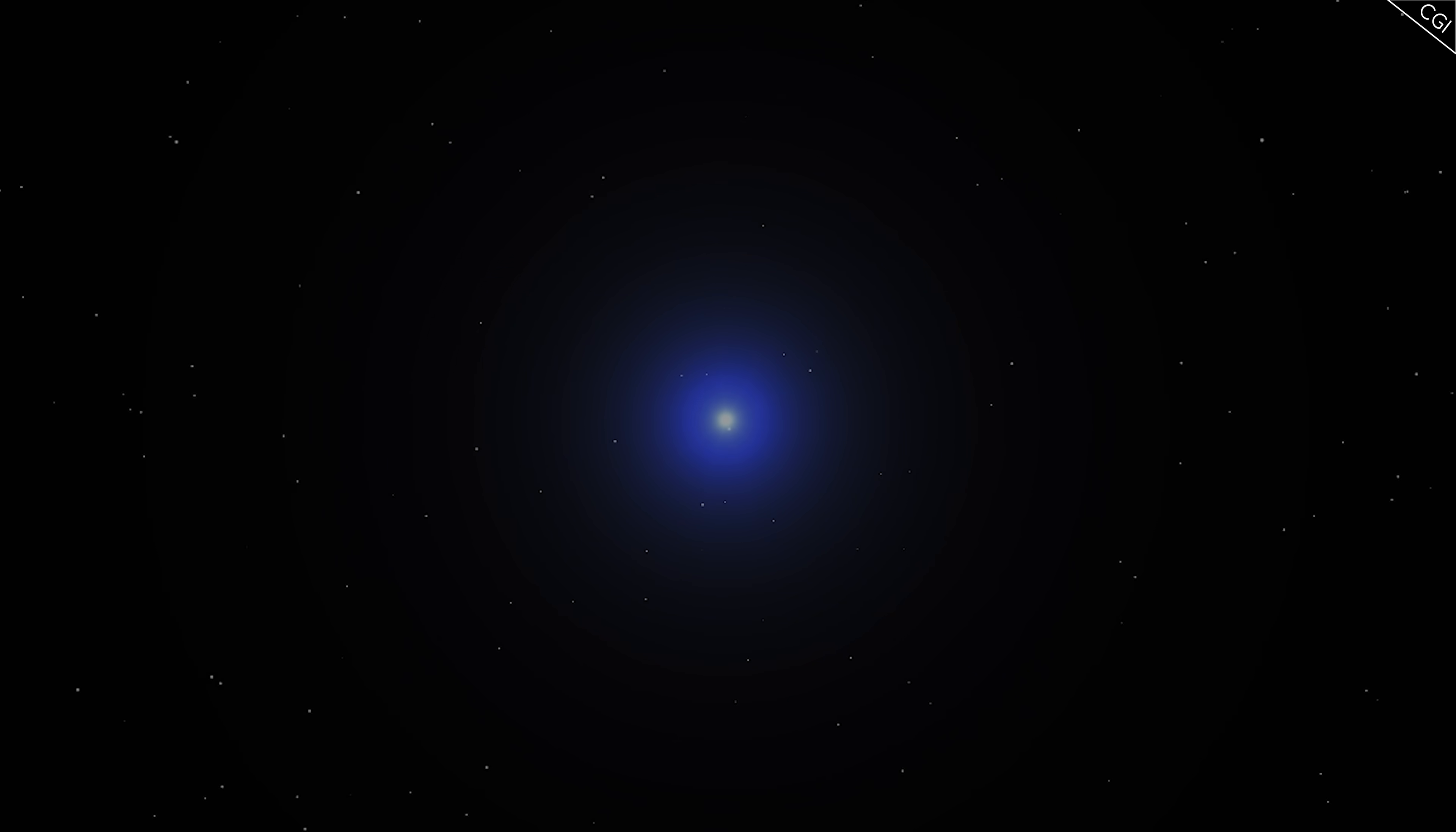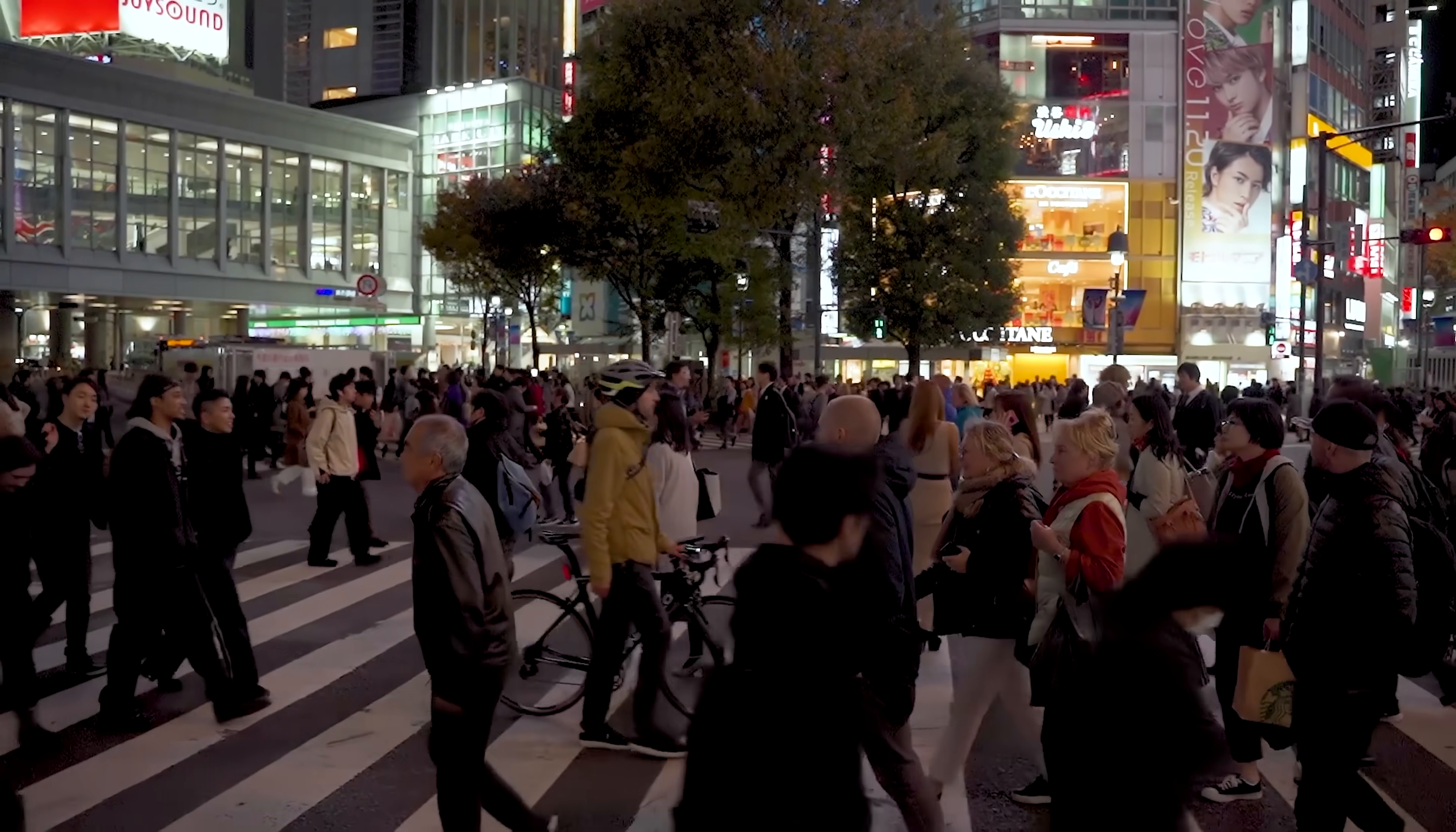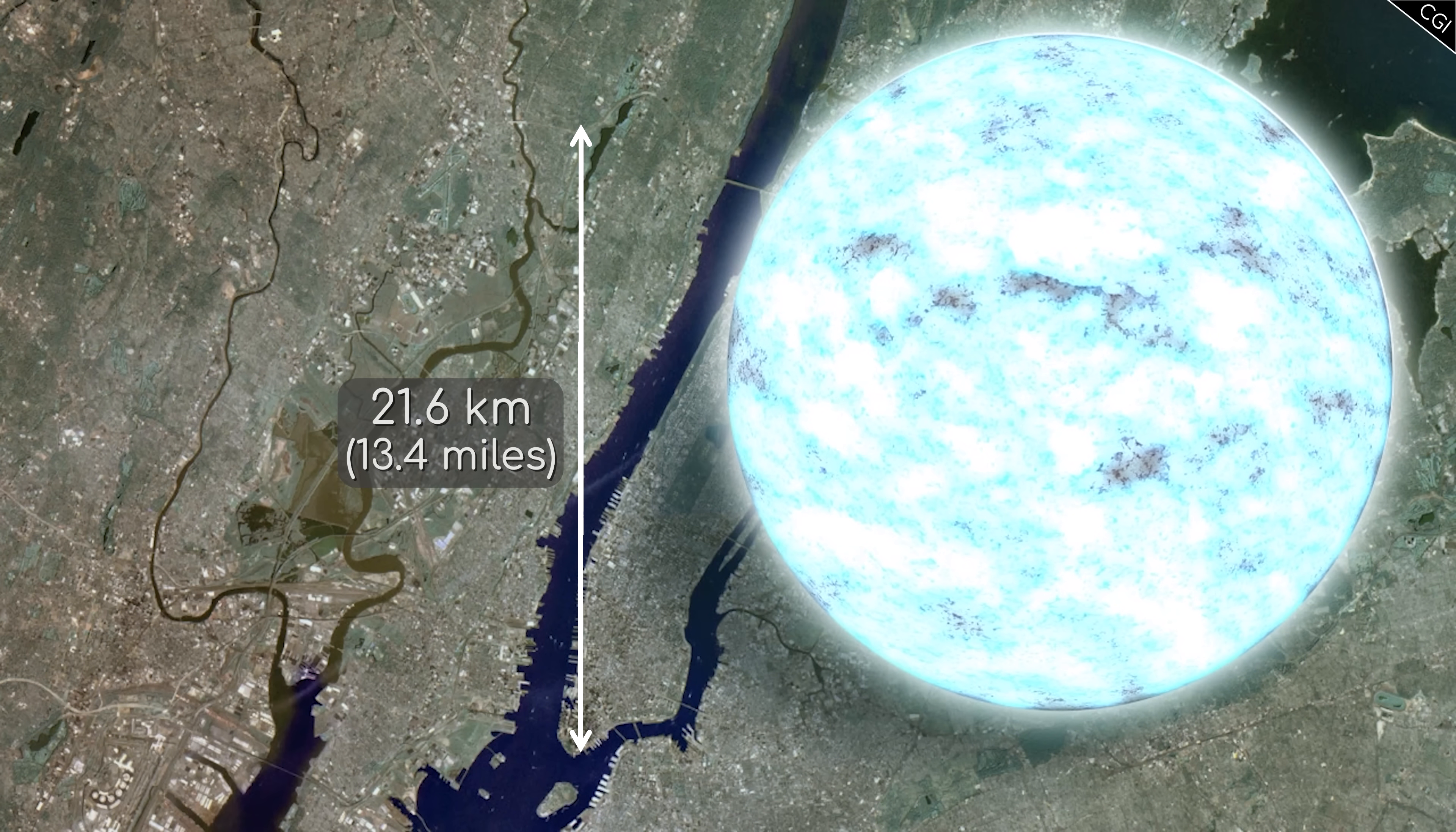But imagine an entire star made purely out of the neutrons that are found in the nucleus. No electrons, no protons, no empty space. Merely a teaspoon of it would have as much mass as 11 times that of the entire human population, all 8 billion people. A typical neutron star is around 35% more massive than our Sun, and squeezed into a sphere that has the diameter about as long as the island of Manhattan. To call it dense would be an understatement.